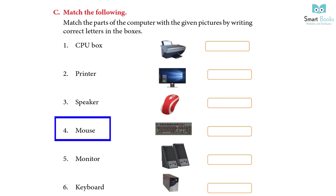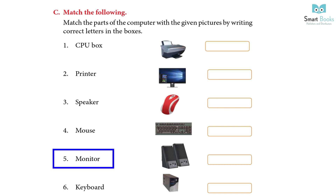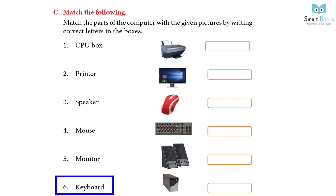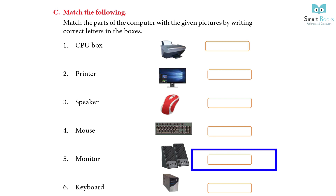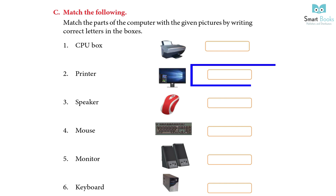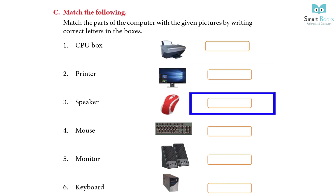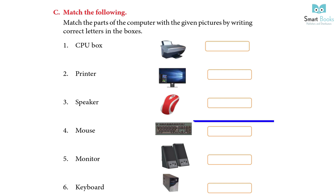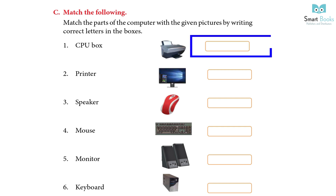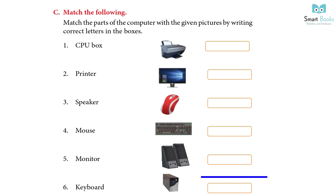Match the mouse with the image of the mouse. Match the keyboard with the image of the keyboard. Write S in front of the speaker, M in front of the monitor, M in front of the mouse, K in front of the keyboard, P in front of the printer, and C in front of the CPU box.